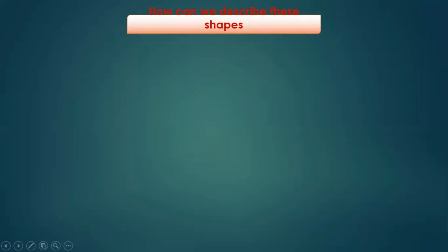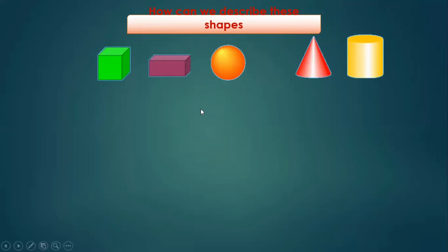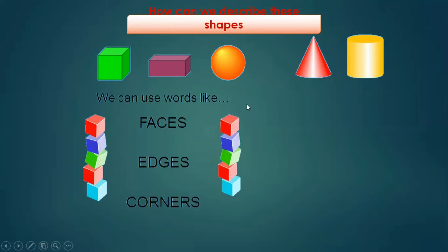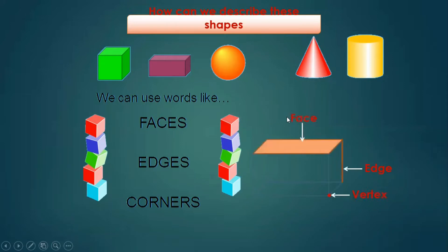How can we describe these shapes? You can see a cube, cuboid, sphere, cone, and cylinder. We can use the words like faces, edges, and corners — how many faces, how many edges, how many corners does it have? Faces are the flat surfaces. The corners where the edges meet are the corners. Where two faces meet are the edges of the 3D shape. This is a face, where two faces meet is an edge, and this is a corner or vertex. We call the singular as vertex and the plural as vertices.